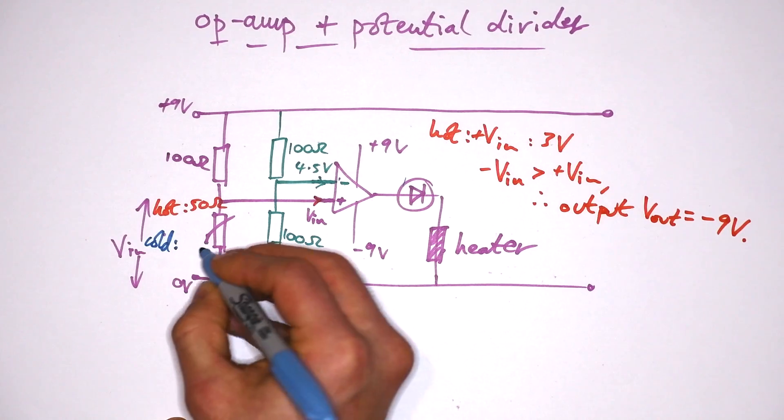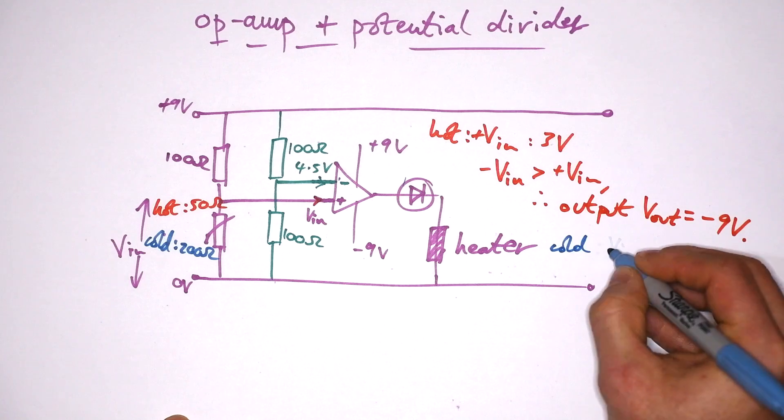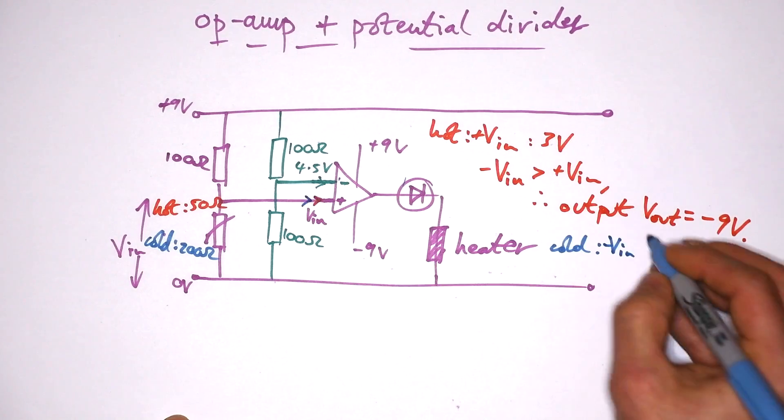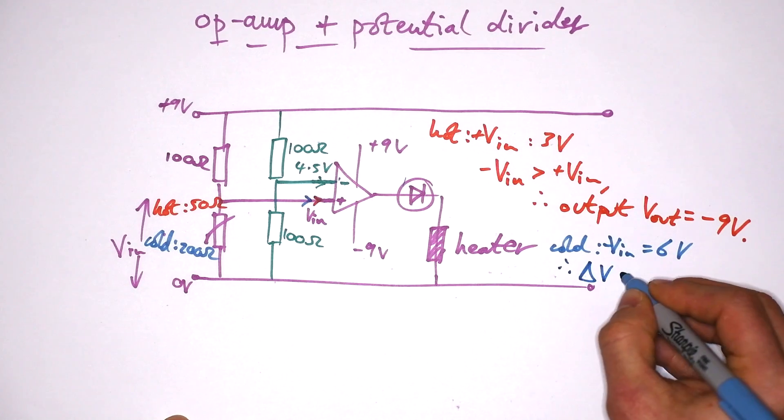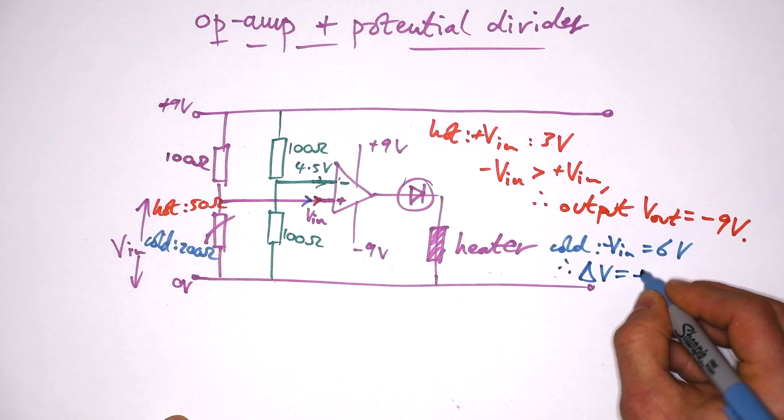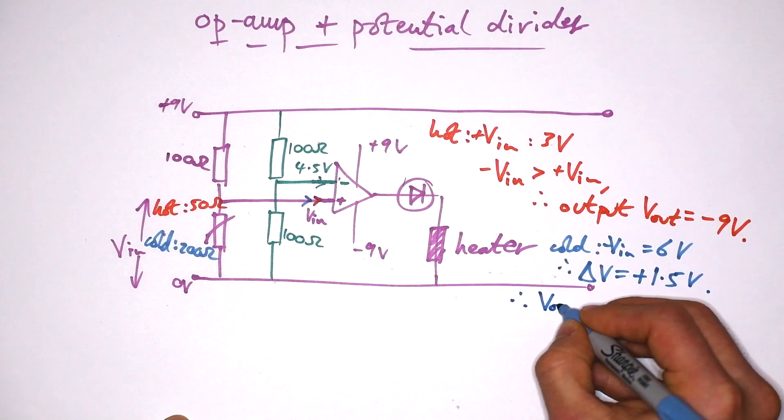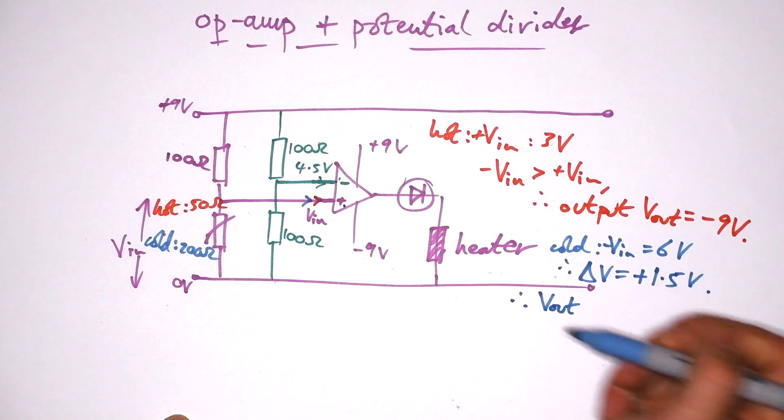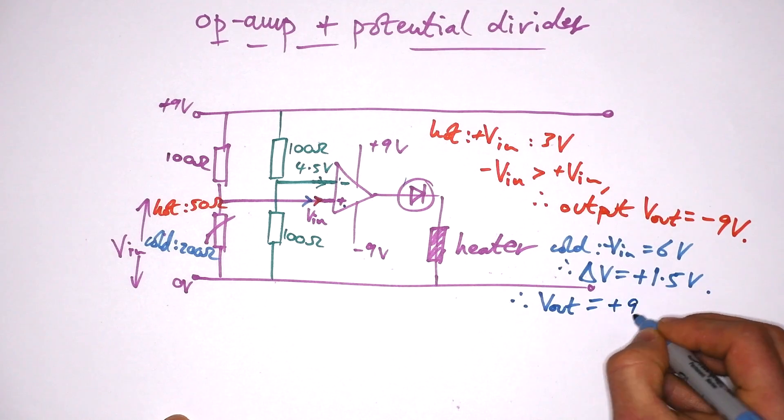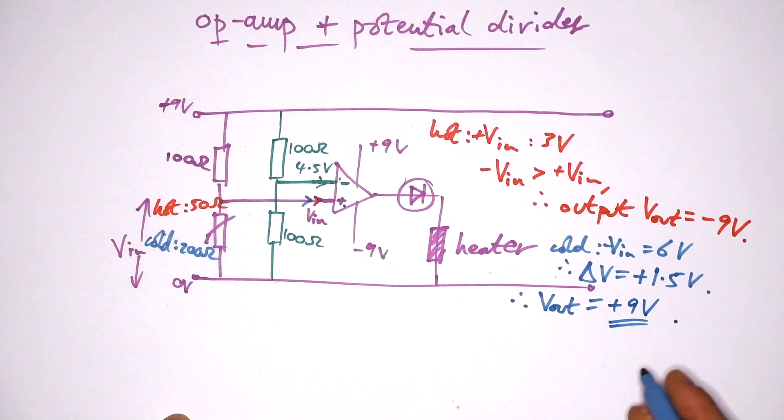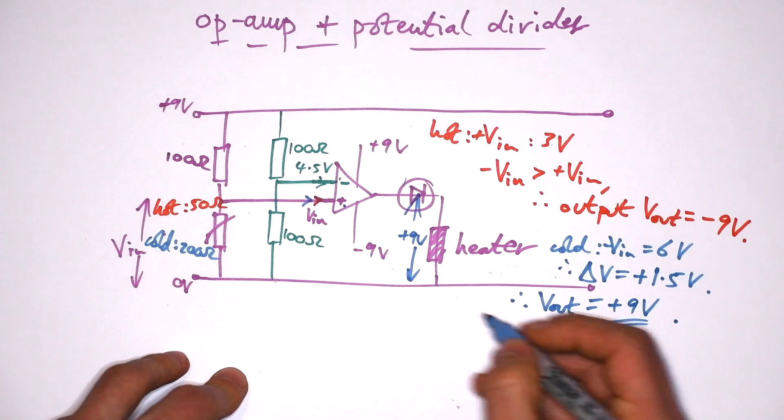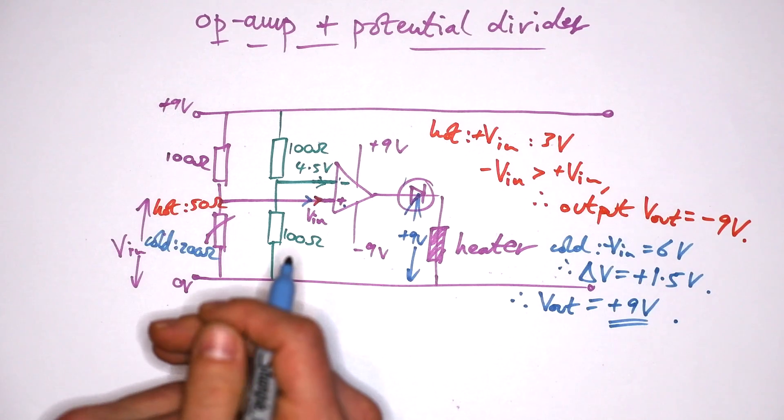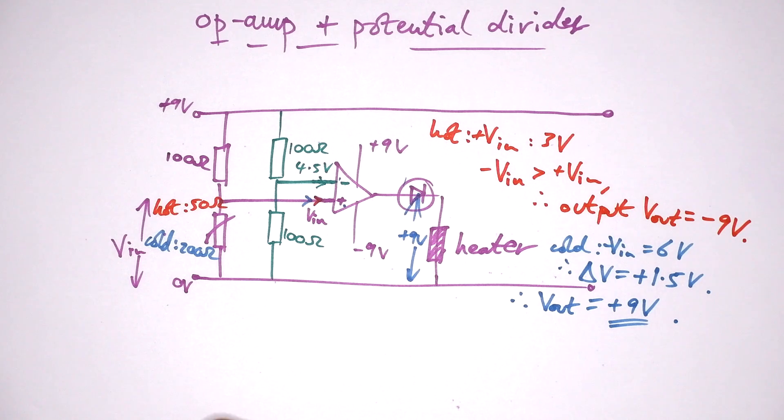What about when it's cold? Let's say that it goes to 200 ohms. This time, V in going in here is equal to 6 volts. Again, split 2 to 1 by the other way around this time. Therefore, the difference in our voltages is going to be plus 1.5 volts. Therefore, V out, because the positive input is greater than the negative input, that's just going to be plus 9 volts saturated again. So that means now that we have plus 9 volts across here. So that means that the heater will turn on and we get some heat being produced. So that's usually the main application of op amps that you will see at A-level.